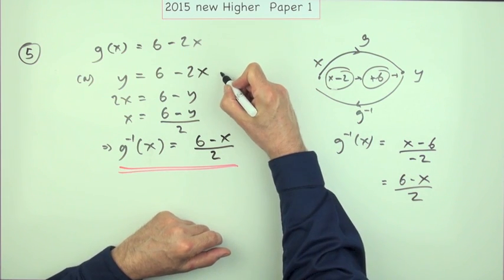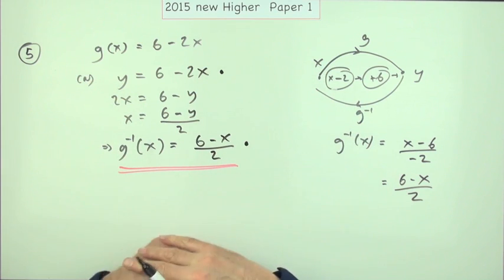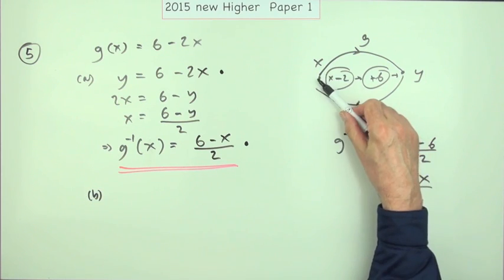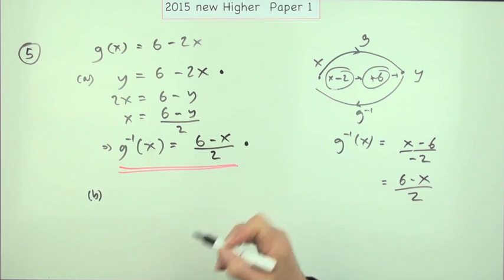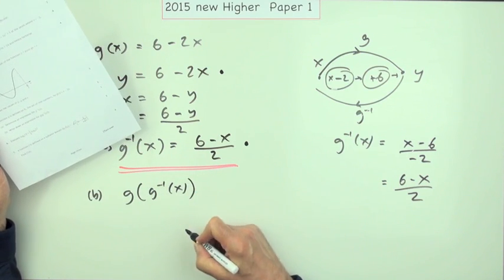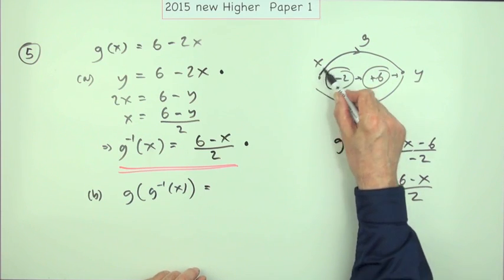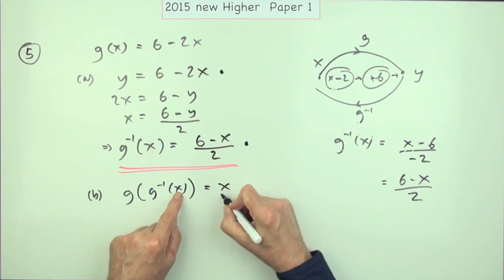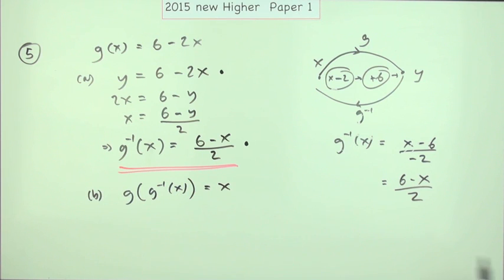The two marks were: the first mark for making the rearrangement statement, and the second for getting the final formula — they wanted it written down rather than just leaping to the answer. As for part (b), that's obvious: if the function takes you to a certain number and the inverse undoes it, then g composed with g inverse just returns you to where you started. Whatever you feed in — call it x, y, or any letter — you finish where you began. One mark.